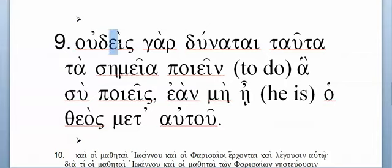Hopefully what you remember is: well, wait a minute, I know heis/mia/hen means 'one' in the masculine, feminine, and neuter. So what I have here is not heis, but oud-heis, so you end up having not only 'one' but 'no one' — and it's a masculine one — so you have 'no one' in the masculine singular nominative.